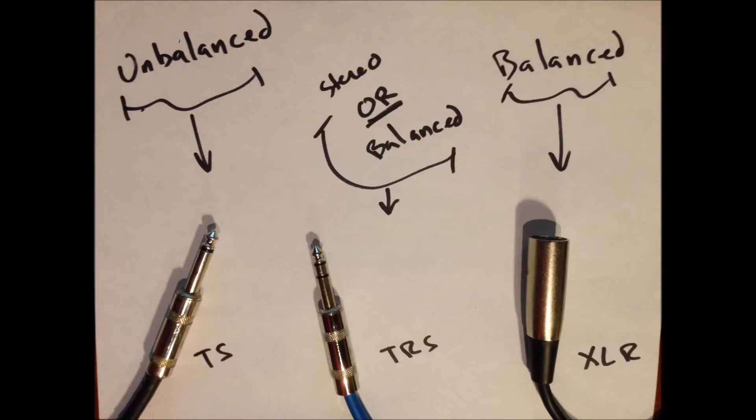Here's an example of a TS, a TRS, and an XLR cable. A TS is an unbalanced cable, usually used for instruments. An XLR cable is usually used for microphones or line levels that are sent everywhere. A TRS cable usually has two different roles, either as a stereo unbalanced cable or as a mono balanced cable, and I'll talk more about that in a minute.